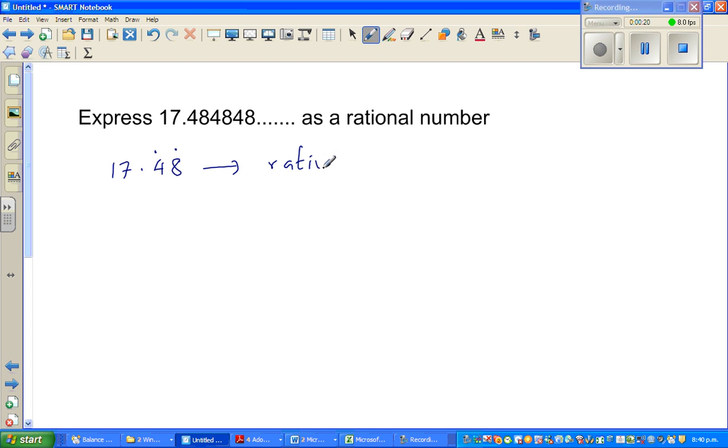So now what is a rational number? A rational number is any number which can be written as a fraction. So if you can write a number as A over B, of course B should not be zero. Now that is a rational number. So basically the question is you want to write this as a fraction. A and B is what you want to find.